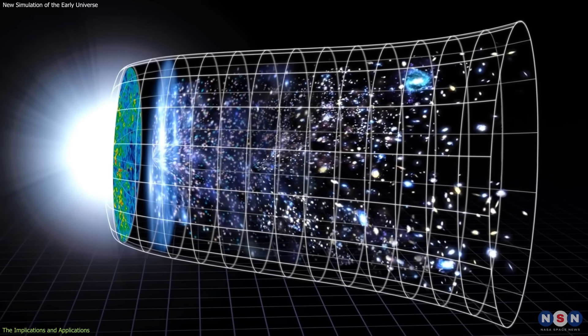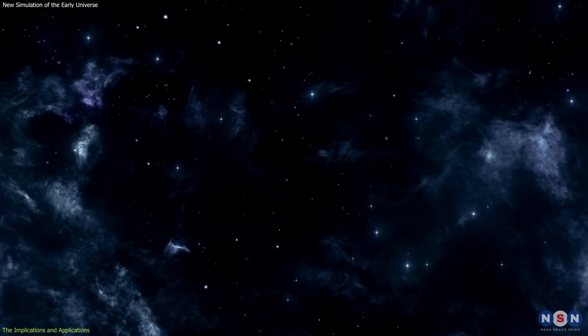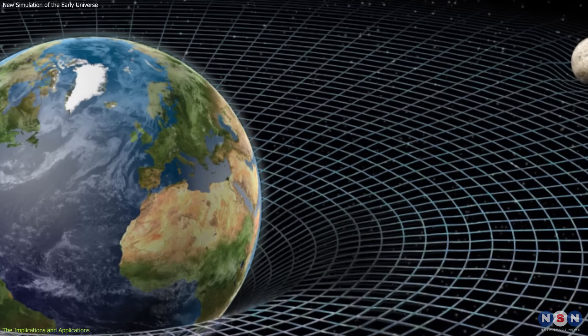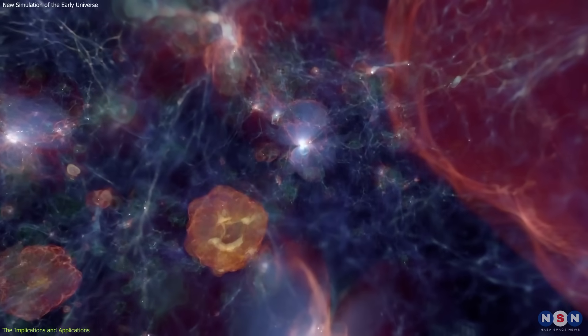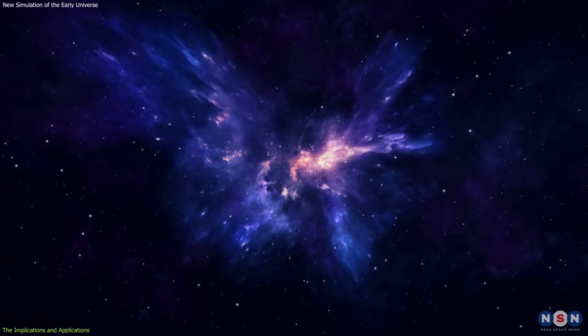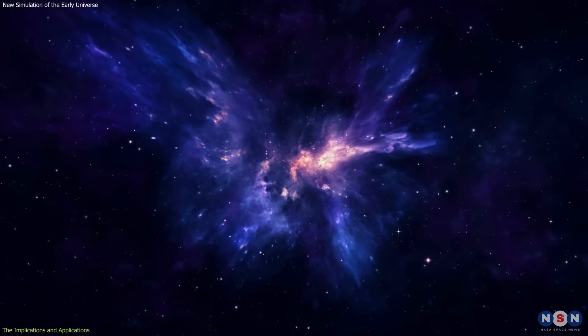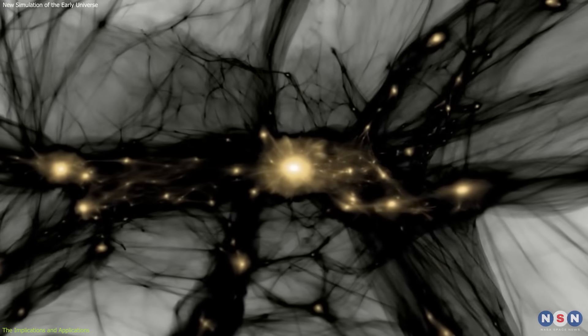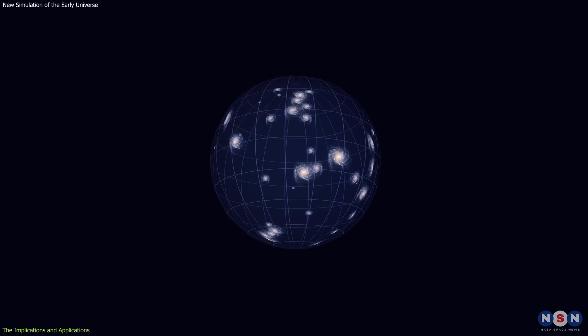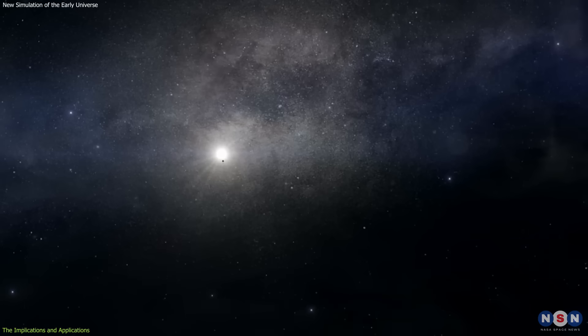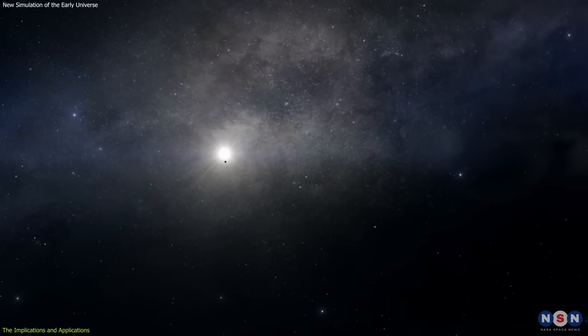Another implication is that this simulation can test or constrain various cosmological models and parameters. For example, this simulation can test the standard model of cosmology, which is based on the assumption that the universe is dominated by dark matter and dark energy and that it follows the laws of general relativity. By comparing the simulation with the observation, we can check if this model is consistent with the data, or if there are any discrepancies or anomalies that require new physics or modifications. We can also constrain some of the parameters of this model, such as the density and nature of dark matter and dark energy, the initial conditions and fluctuations of matter and radiation, the expansion rate and age of the universe, etc. By measuring these parameters with high precision and accuracy, we can improve our understanding of the origin and fate of the universe.